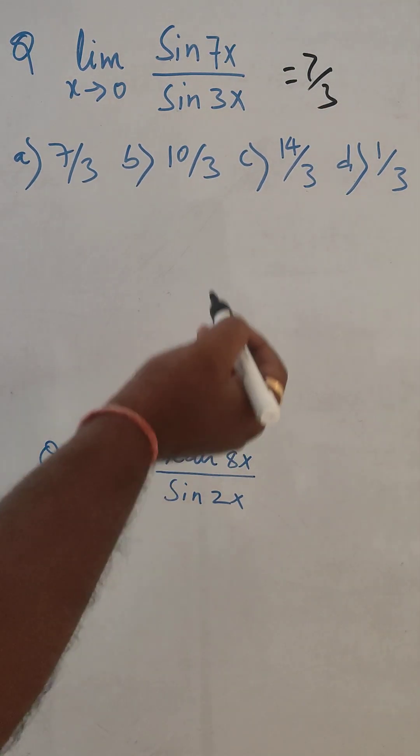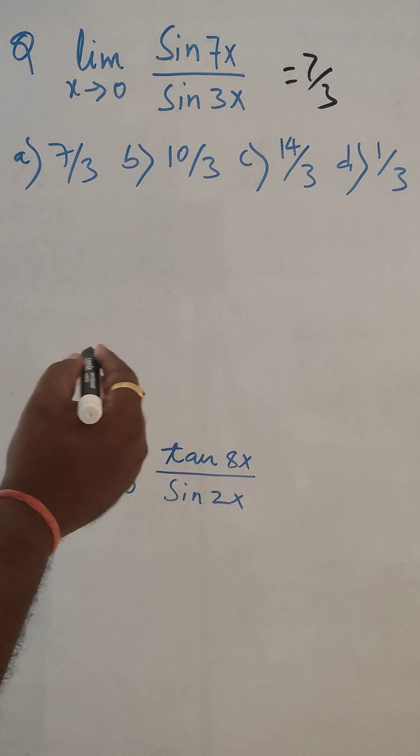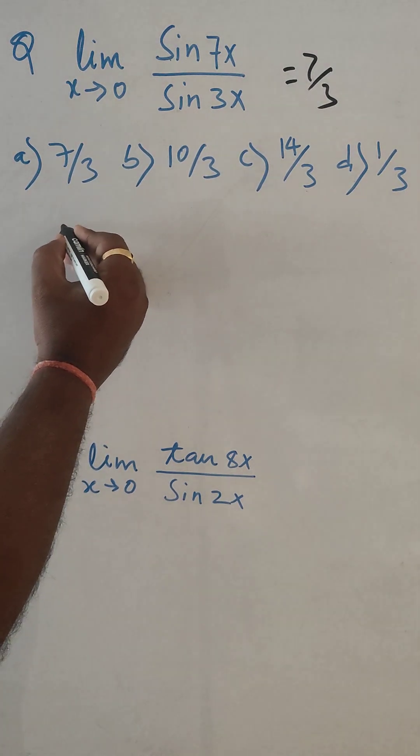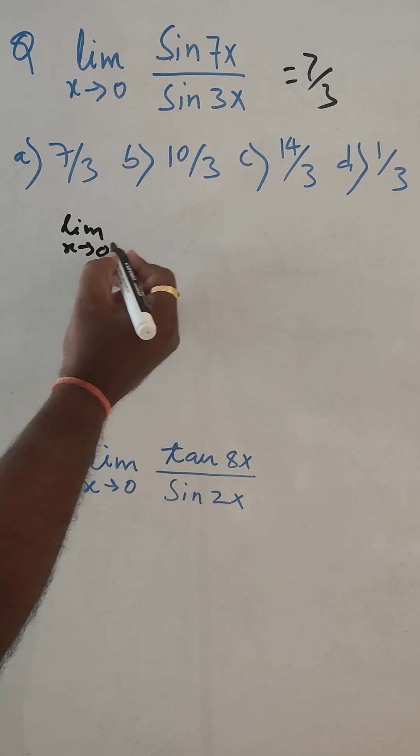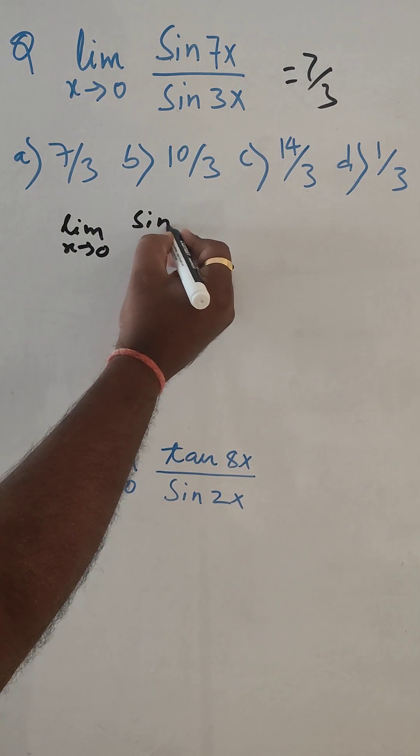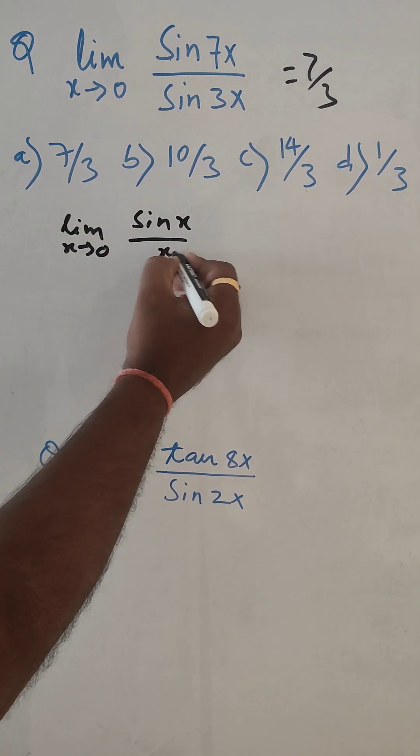And if you don't know formula, it will take some time. So what is the formula? If limit x tends to 0 and sin x divided by x will be 1.